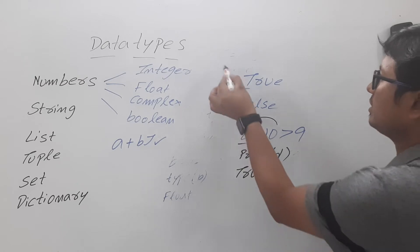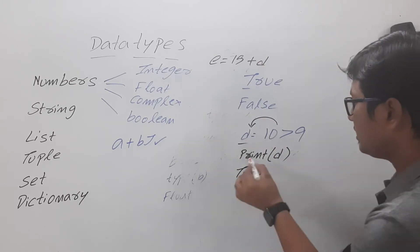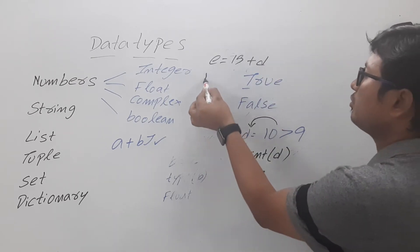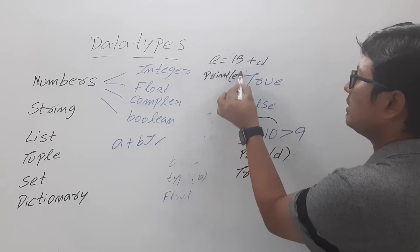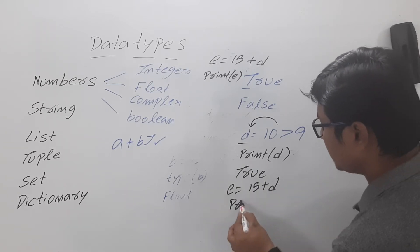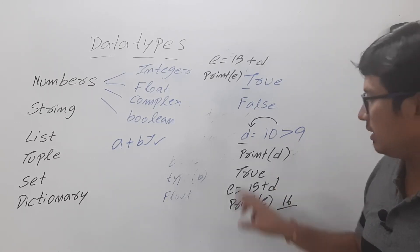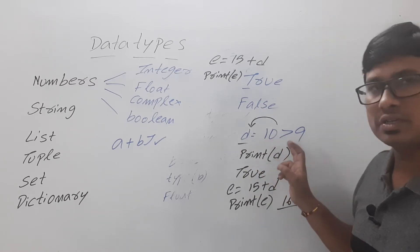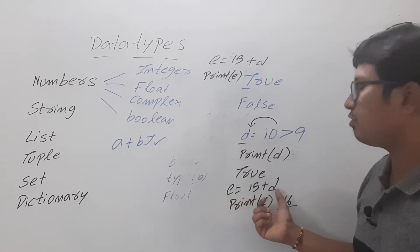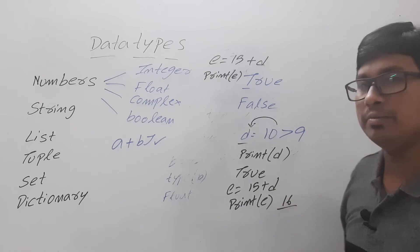Suppose I have e = 15 + d, where d has the value True. It will be 15 + 1 = 16. If you print e, the value 16 will be displayed, because True in binary is 1 and False is 0. So 15 plus True equals 15 plus 1 equals 16.